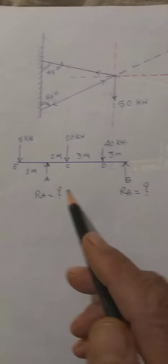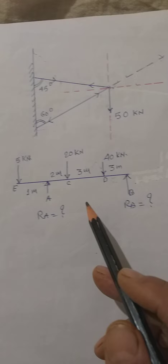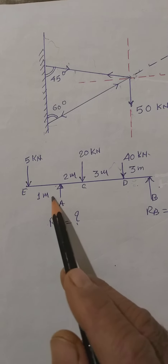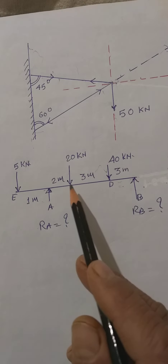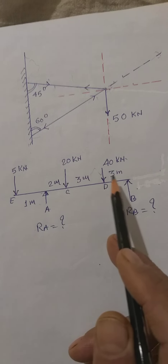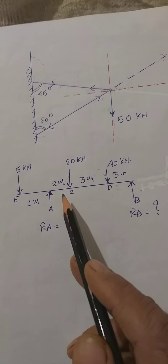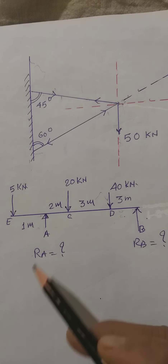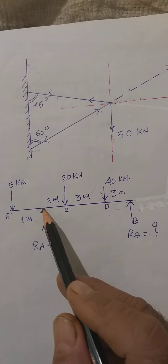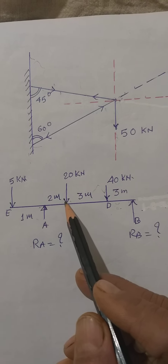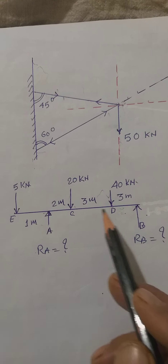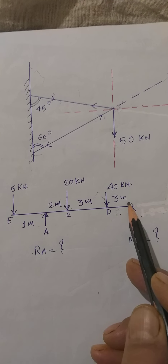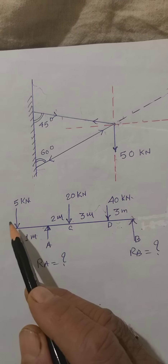We have seen such problems before, but there is a slight change here: an overhang has been added. Previously it was simply supported with two loads. Now, two loads are already given, but in addition there is one overhang with a load of 5 kilo Newton. The distance from Ra to the first load is 2 meters, between the two loads is 3 meters, between the third load and Rb is 3 meters, and the overhang is 1 meter with a load of 5 kilo Newton. We have to find the reactions Ra and Rb.